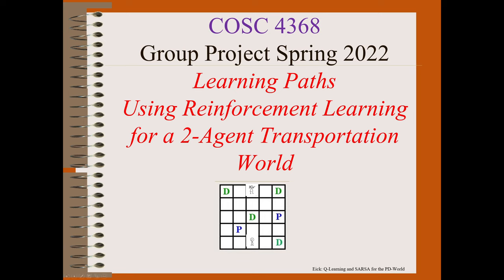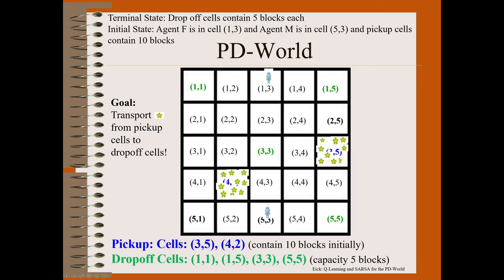So we can look at our world here. We were given a 5x5 grid with four drop-off points noted in green, and then two pickup points noted in blue. Each pickup point would have ten items in them to start off with, and the drop-off points would be empty. The goal of each episode or terminal state reached was to deliver all of the items from each pickup point into the drop-off points. The drop-off points have a capacity of five blocks, so at the end of an episode, both pickup points will have zero blocks, and each of the four drop-off points will have five blocks.